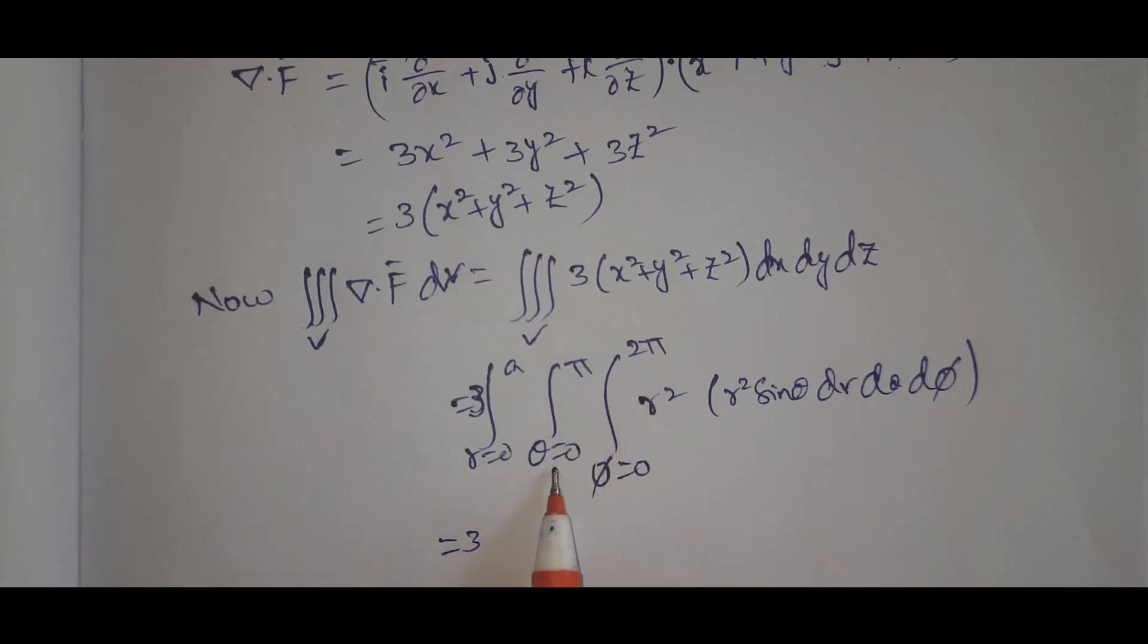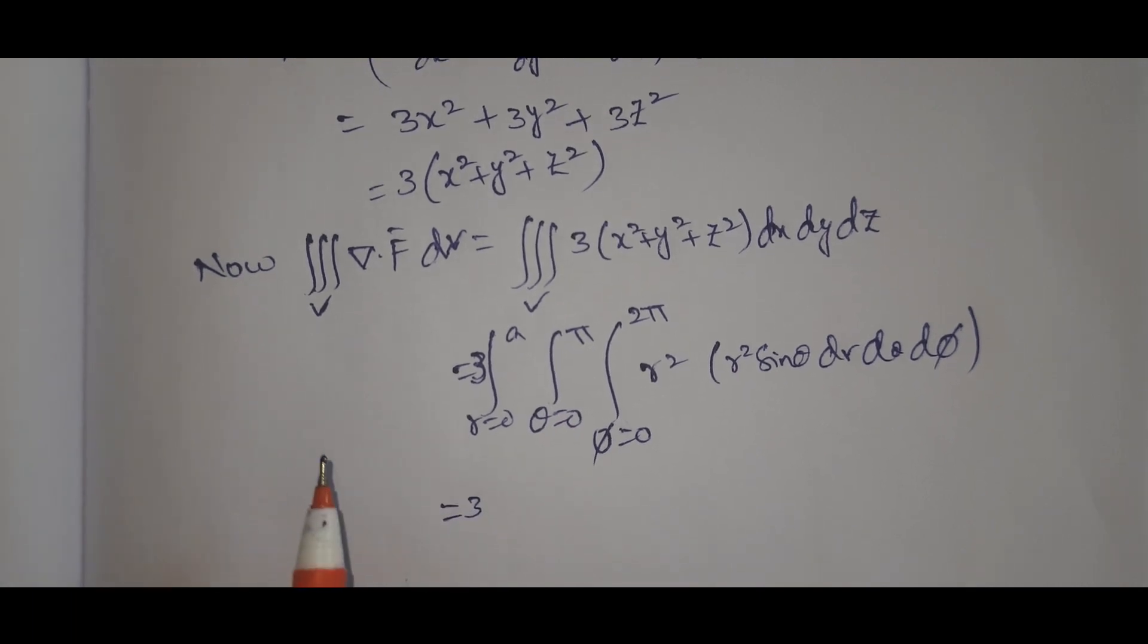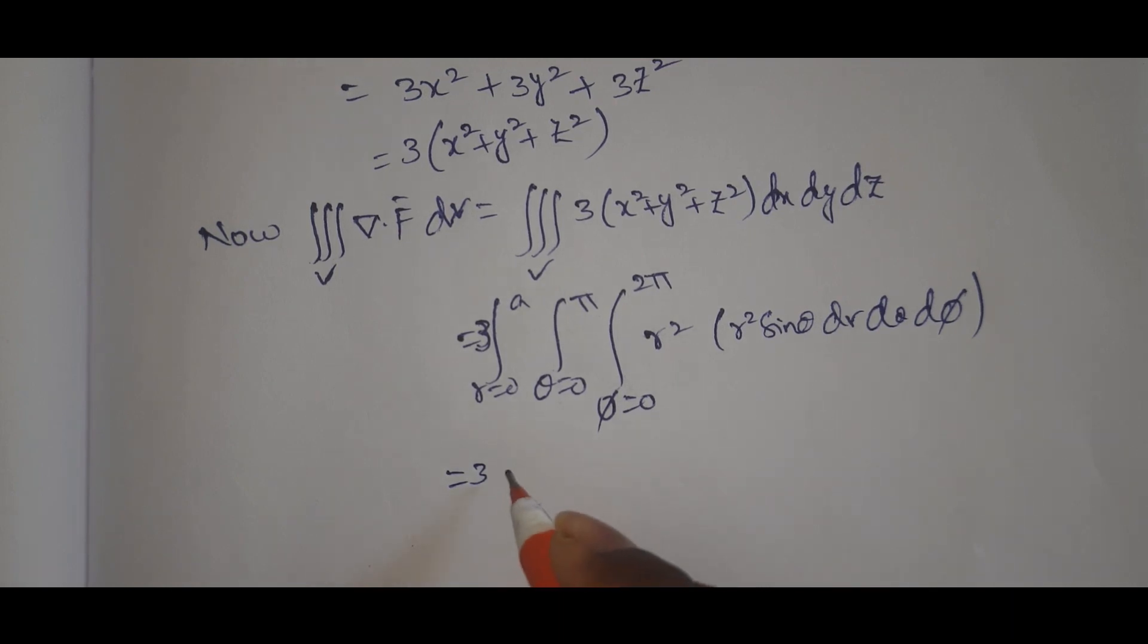So we have phi from 0 to 2pi, theta from 0 to pi, r from 0 to A. This equals 3 times